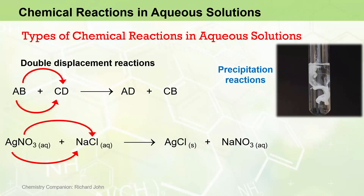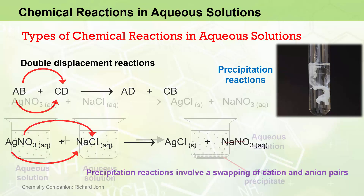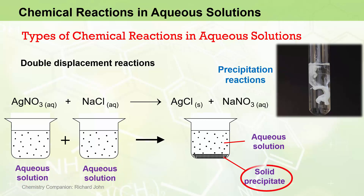At the same time, the nitrate anion is displacing the chloride anion, resulting in the formation of an aqueous sodium nitrate solution. This double-displacement or metathesis precipitation reaction involves an exchange or swapping of cation and anion pairs between the two aqueous solutions. A pictorial representation shows the mixing of two aqueous solutions resulting in the formation of a solid salt precipitate, which generally slowly sinks to the bottom of its container, plus another compound dissolved in water as an aqueous solution sitting above the solid precipitate.